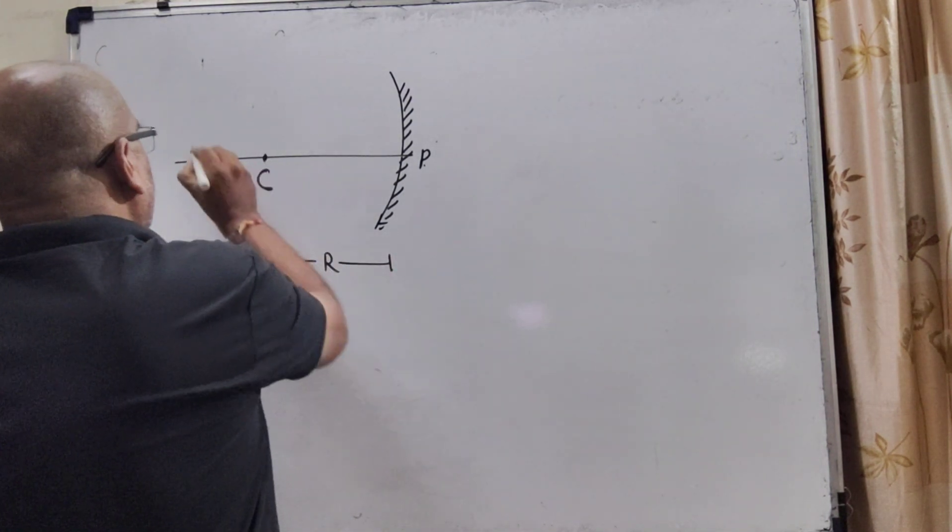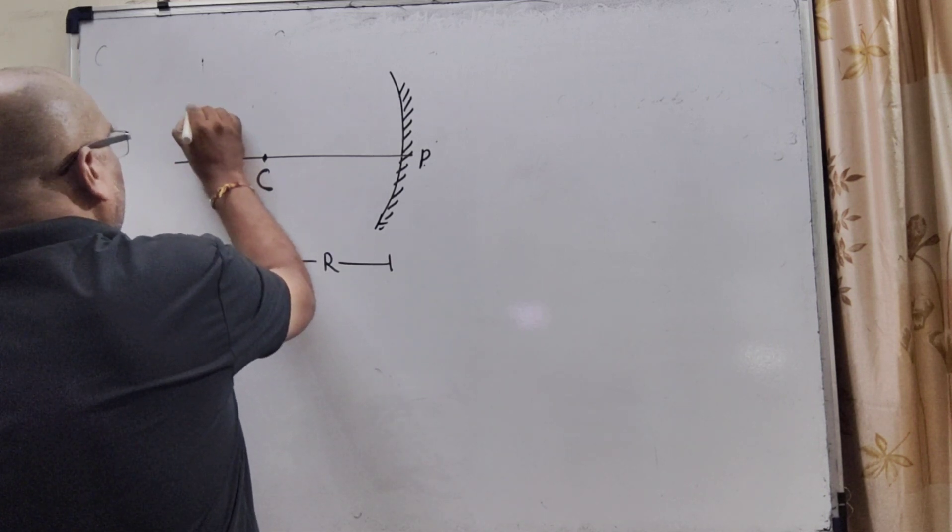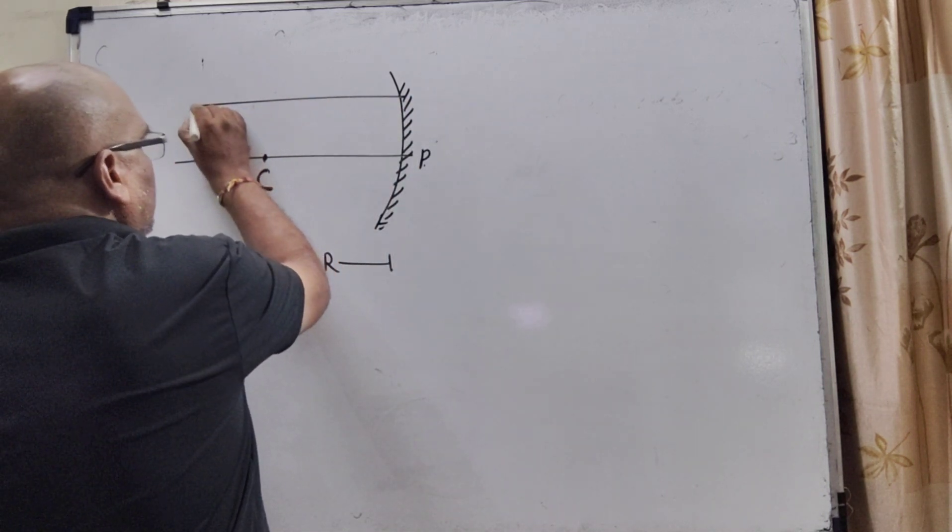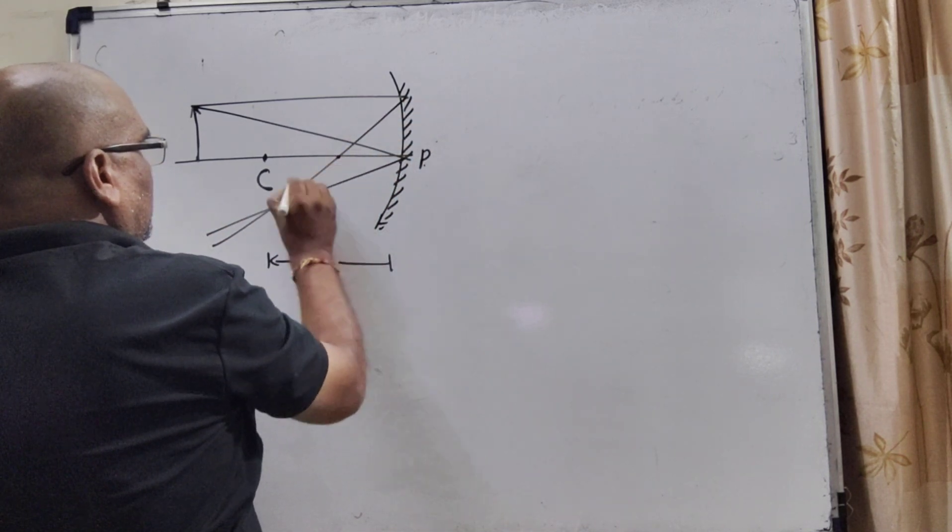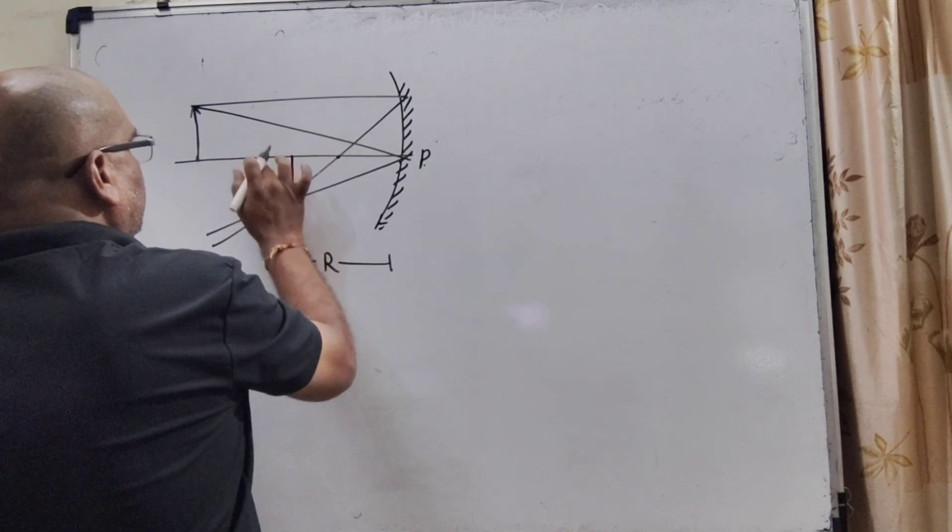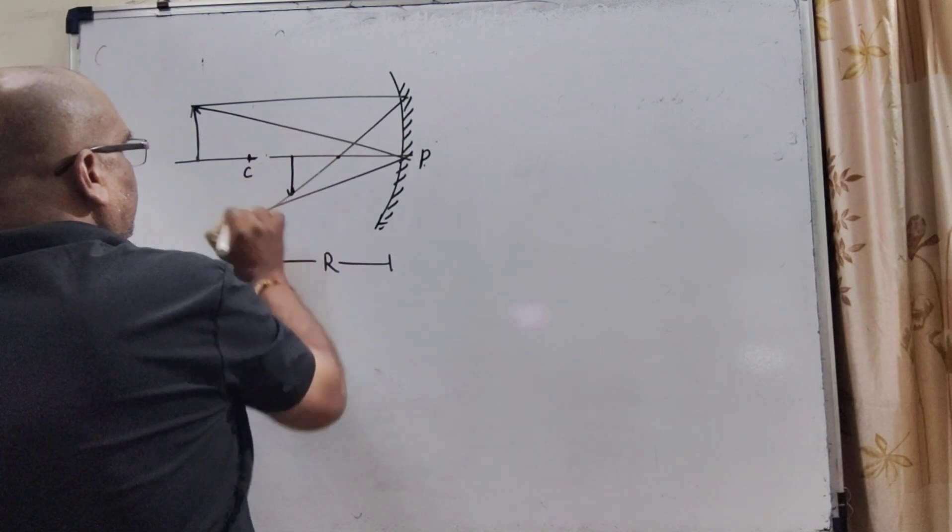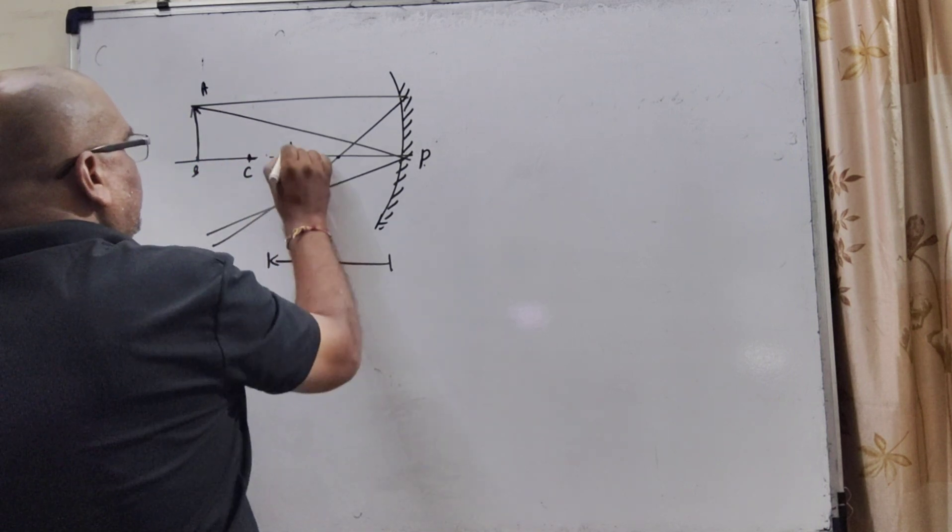Here, beyond C, the object is kept. And its image, as we know that, the image is formed between pole and center of curvature. This is AB, this is AB, this is A dash B dash.